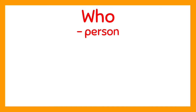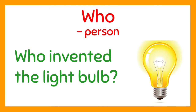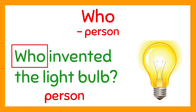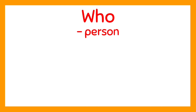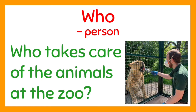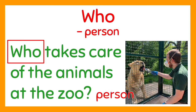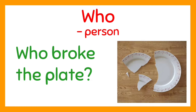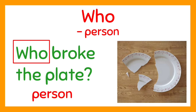Now let's move on to 'who.' Who is used to ask about a person. For example, 'Who invented the light bulb?' This question asks about the person who invented the light bulb, so 'who' is used. Next: 'Who takes care of the animals at the zoo?' Who is used here because this question asks about the person who takes care of the animals at the zoo. Another one: 'Who broke the plate?' Who is used because the speaker wants to know the person who broke the plate.